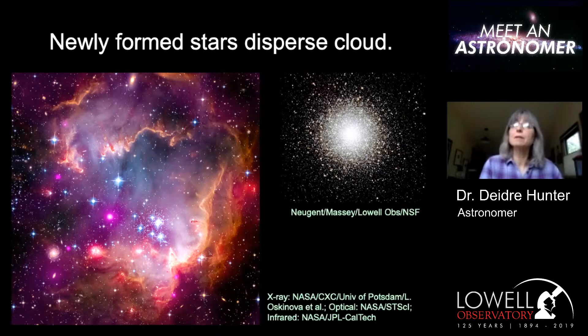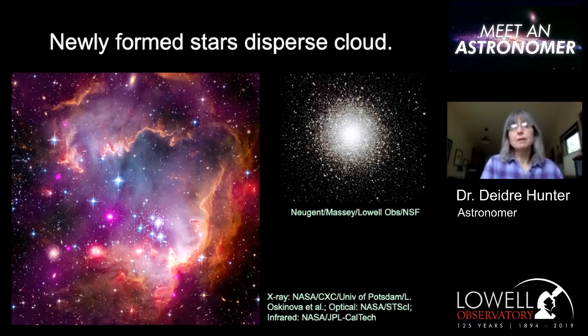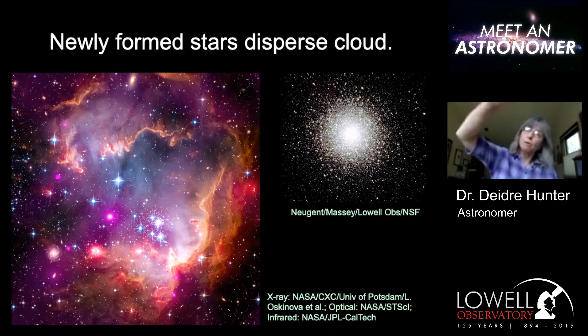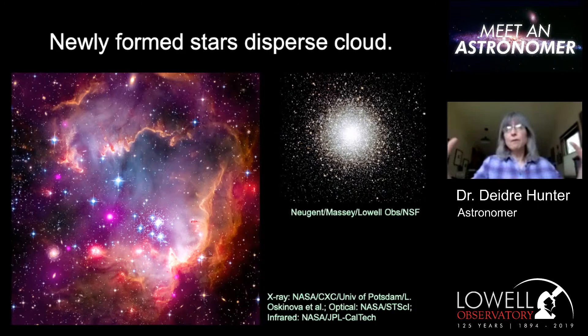Most of the stars that form today in the Milky Way are forming in these looser OB associations. There aren't as many stars and they aren't as dense, so gravity doesn't keep them together. Once they form, the stars rotate about the center of the galaxy but also have random motions, so they wander off into the stellar disk. The Sun's siblings have done that — they've wandered off and we don't know who they are anymore.